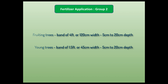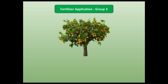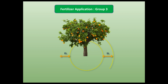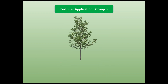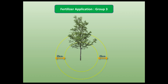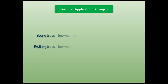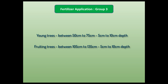In Group 3 — the citrus group — the trees have shallow roots and spread quite wide, starting from about 1 meter away from the trunk with a narrow band width of only one foot, and they are closer to the soil surface at about 5 to 10 centimeters depth. In younger trees it is about half of the full-grown measurement — starting 50 centimeters from the trunk with a narrow width of 25 centimeters. The citrus tree mouths are located between 50 to 75 centimeters in young trees and 105 to 135 centimeters in grown-up trees.